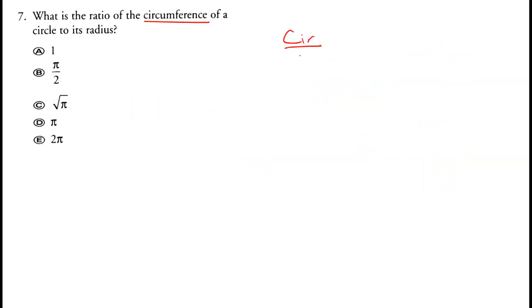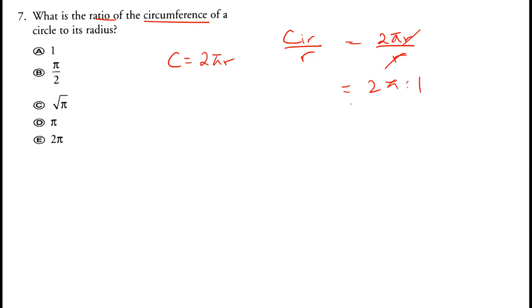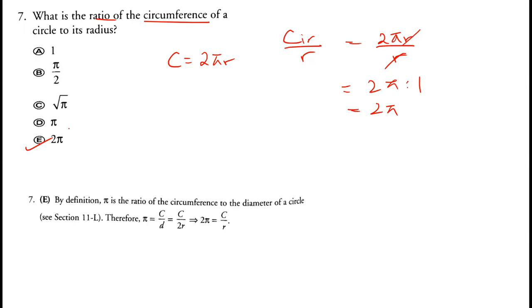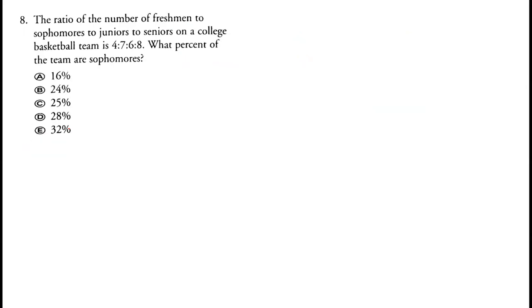What is the ratio of the circumference of a circle to its radius? The formula for circumference is 2πr, so 2πr divided by r gives the ratio 2π to 1, or simply 2π. The correct answer is option E.